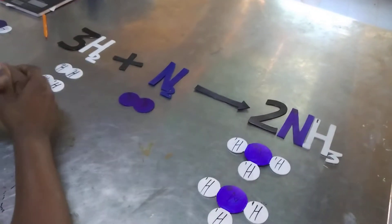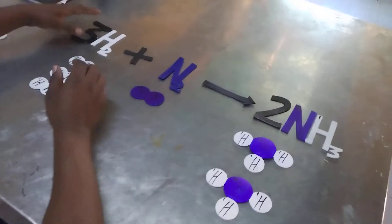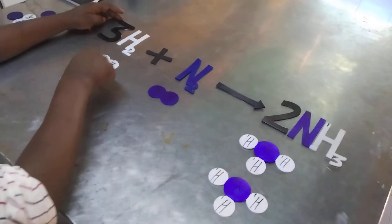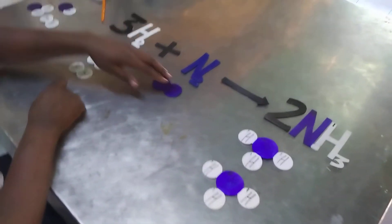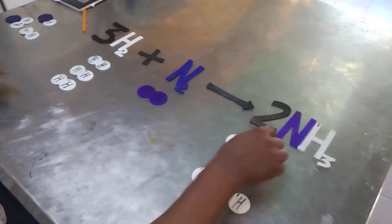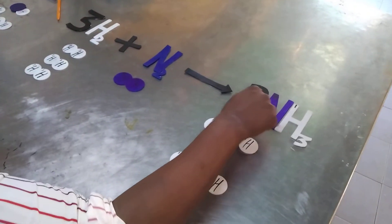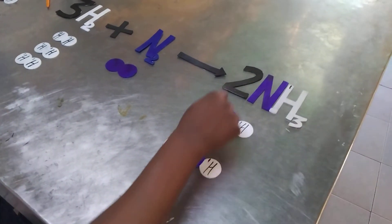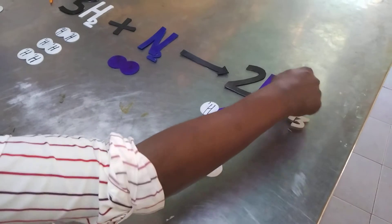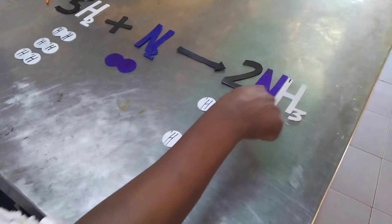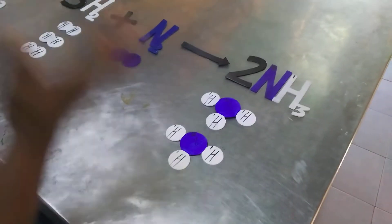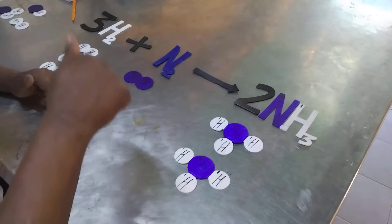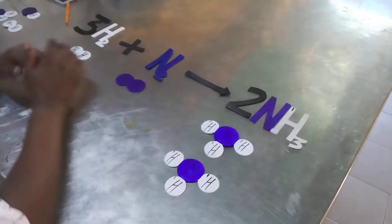Our equation is now balanced. If you multiply three by two you get six hydrogen atoms on the product side — one, two, three, four, five, six. Two times one gives two nitrogen atoms. And two times three gives six hydrogen atoms on the reactant side as well.